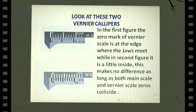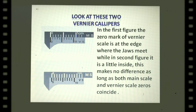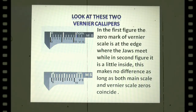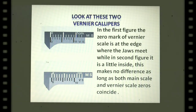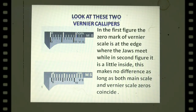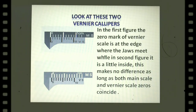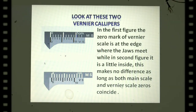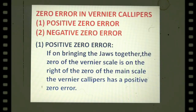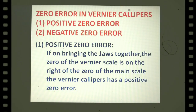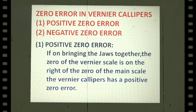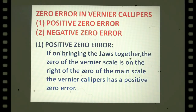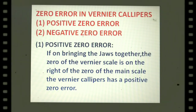Now look at these two vernier calipers. In the first figure the zero mark of the vernier scale is at the edge where the jaws meet, while in the second figure it is a little inside. This makes no difference as long as both main scale and vernier scale zeros coincide. Now we come to zero error — there are two kinds: positive zero error and negative zero error.